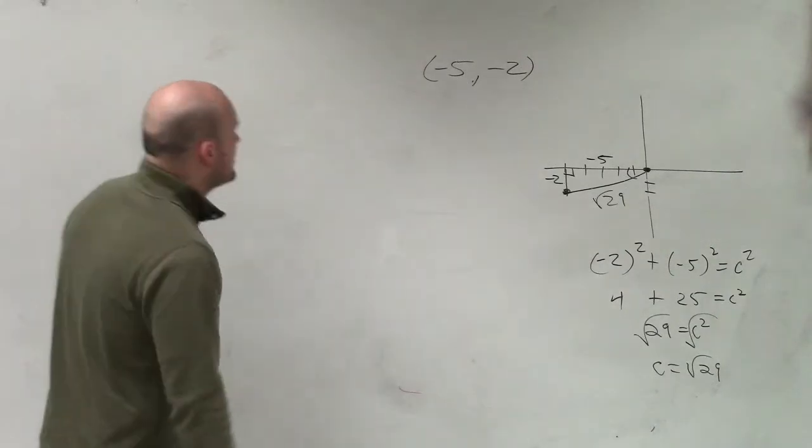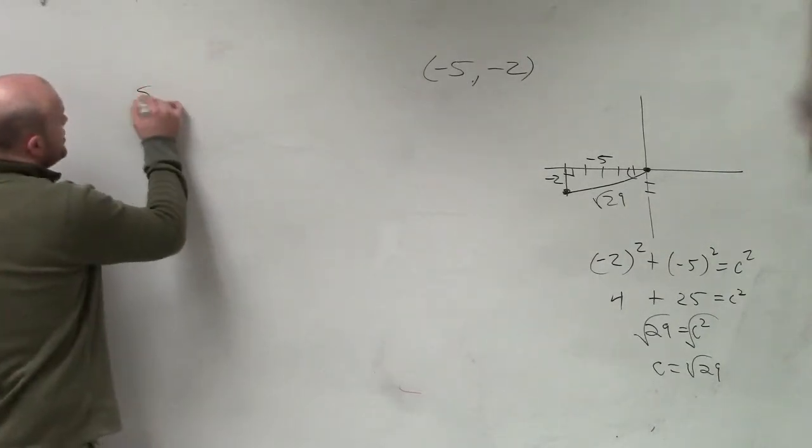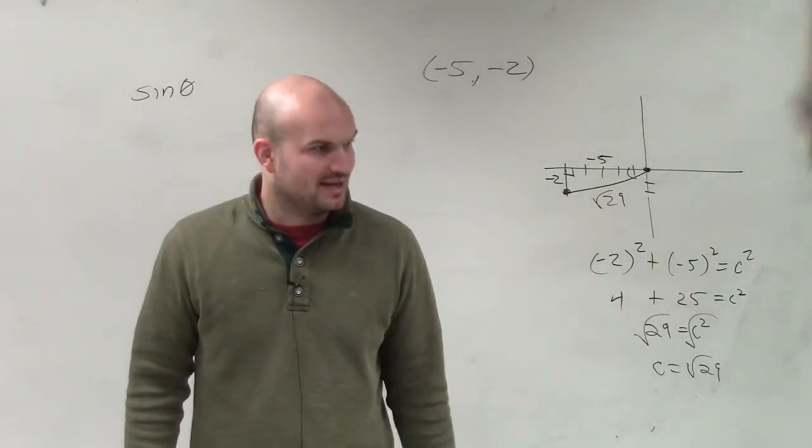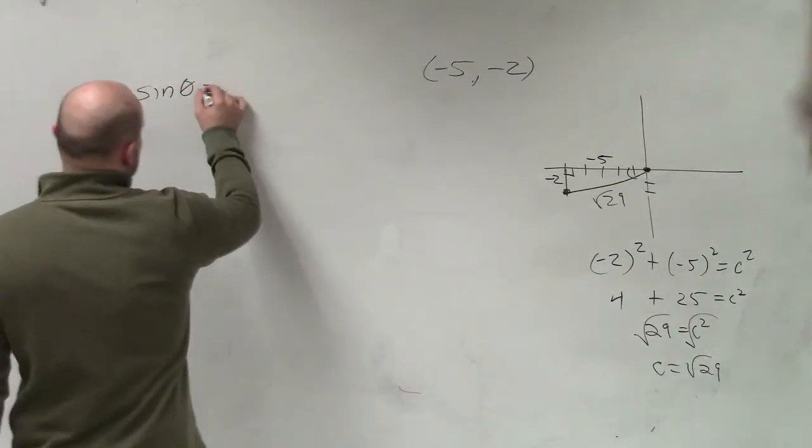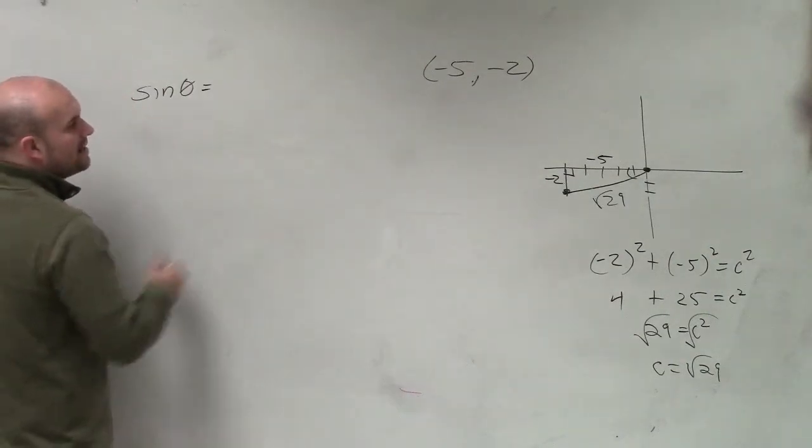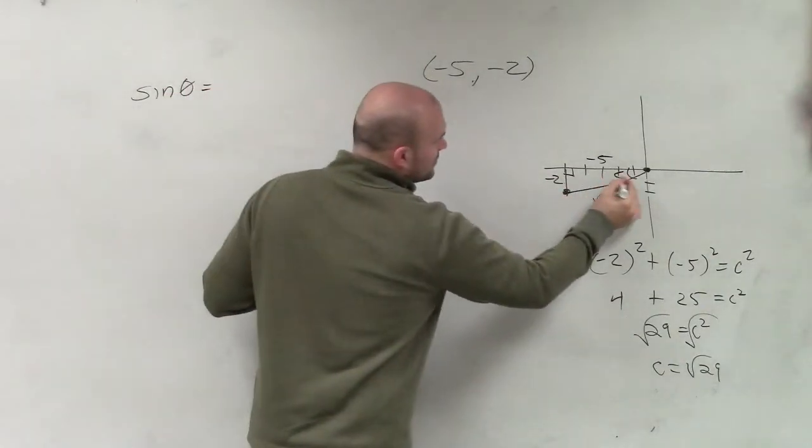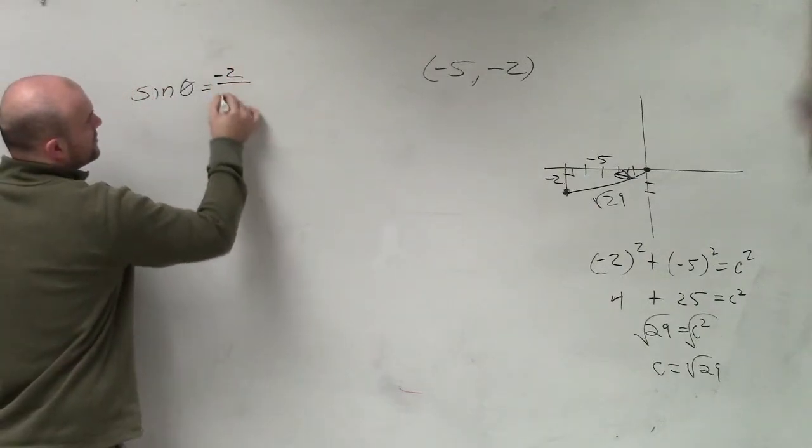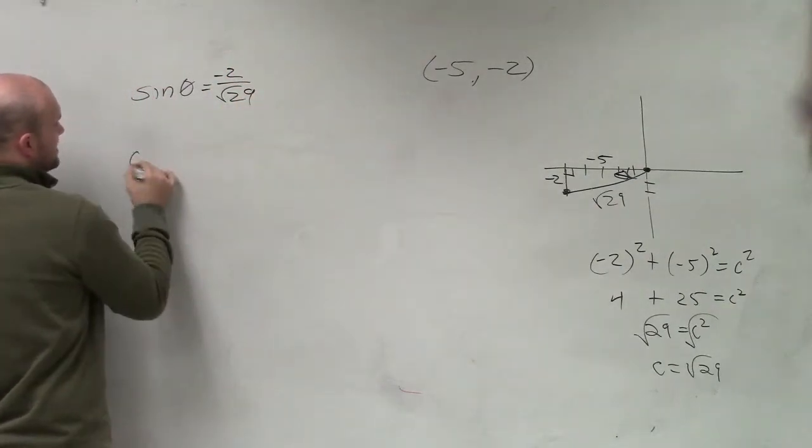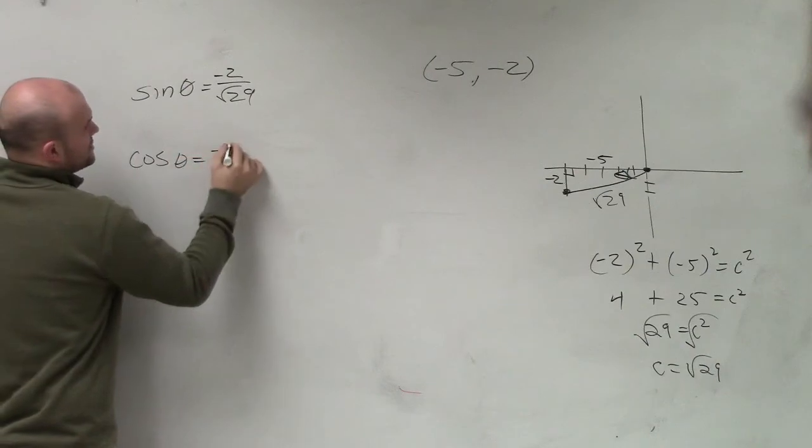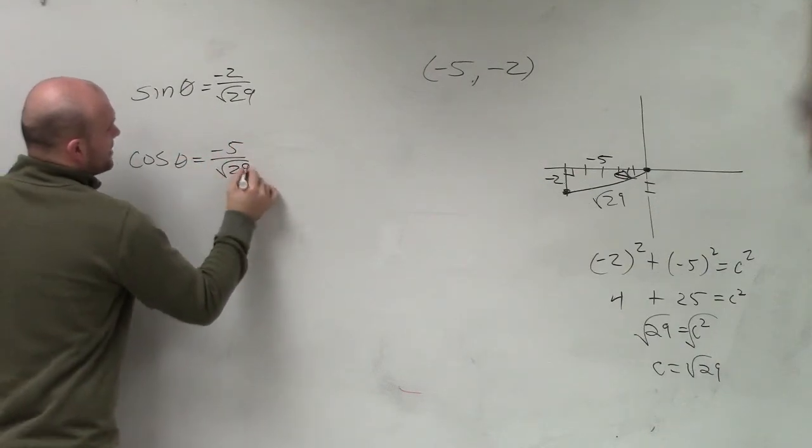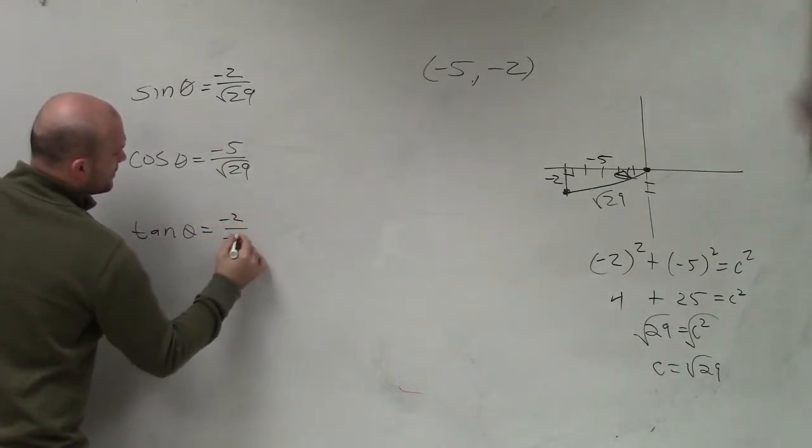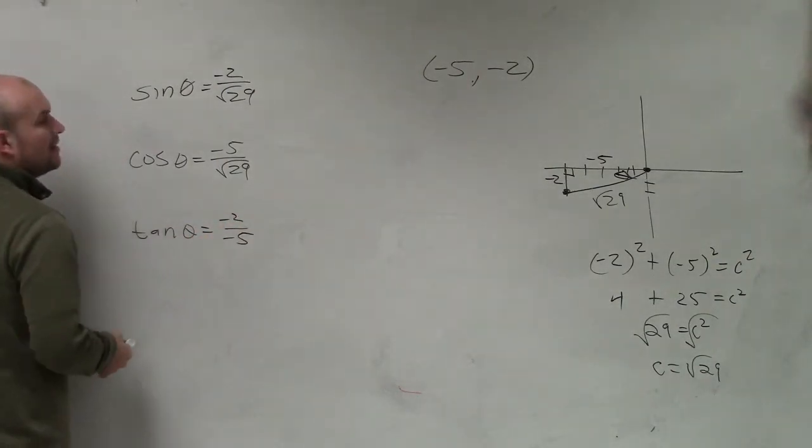So now we just need to evaluate our six trigonometric functions. As you guys are very familiar, I don't need to go over the opposite over hypotenuse because we did that in the last homework quiz. So sine, remember, is opposite over hypotenuse. So here's our angle, right? It's always a central angle. So that's going to be negative 2 over the square root of 29. I'll simplify in a second. Cosine of theta equals negative 5 over the square root of 29. And tangent of theta equals negative 2 over negative 5.